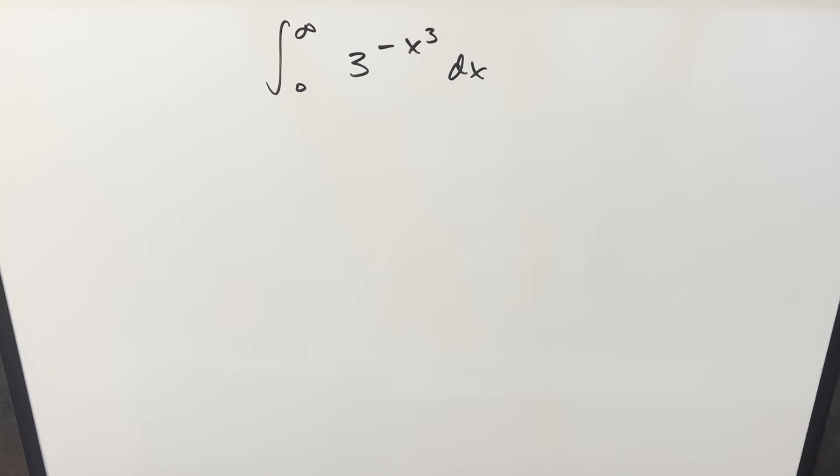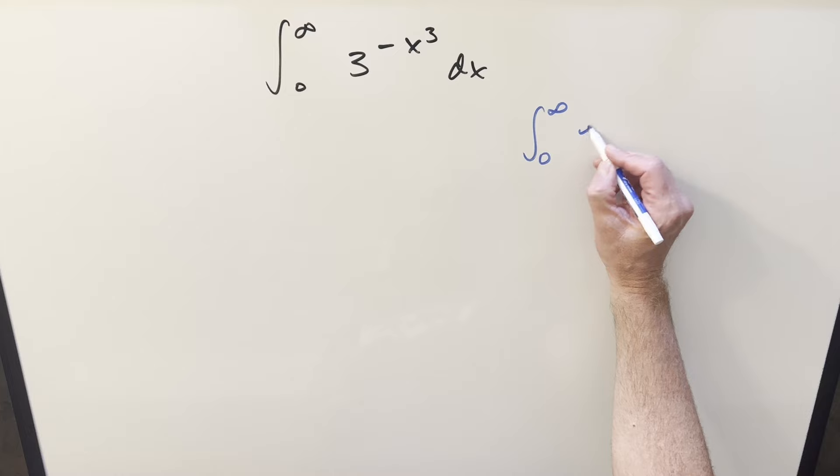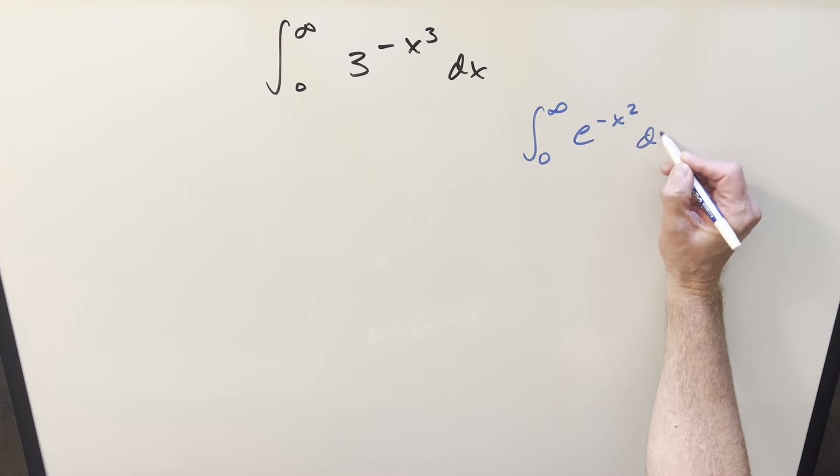Okay, we have some interesting math today. We've got the integral from 0 to infinity, 3 to the minus x cubed dx. Now, I don't really remember ever doing anything quite like this, although it does make me think of the Gaussian integral. For the Gaussian integral, we've got the same bounds. It's going 0 to infinity, e minus x squared dx.